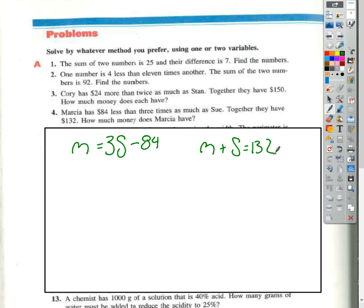And again, if I have two standard form expressions, I am going to use the elimination method. If I have one slope intercept and one standard, I'm going to use substitution because it's easier. So M is equal to that. So we have 3S minus 84 plus S is equal to 132.